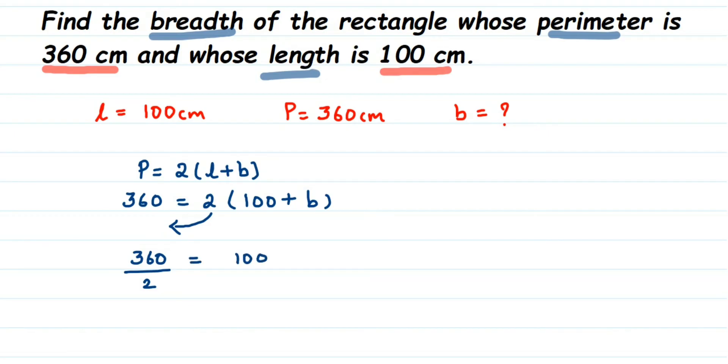Now, cancel this 360 and 2. Divide this. 2 1s are 2 and here 2 1s are 2. 3 will get cancelled. 2 1s are 2, 1 is the remainder. I am going to write this along with 6. That makes the number 16. It is like normal division how we do the same thing but I am doing here itself. Then 2 8s are 16 and then 2 0s are 0. We got 180 here.